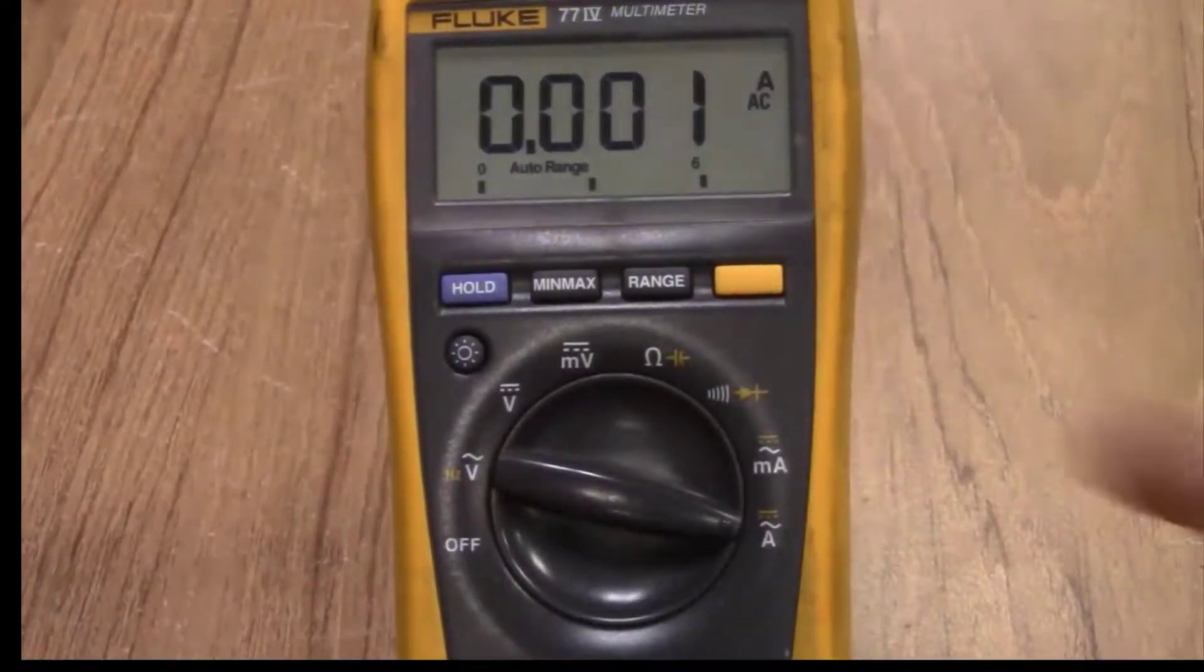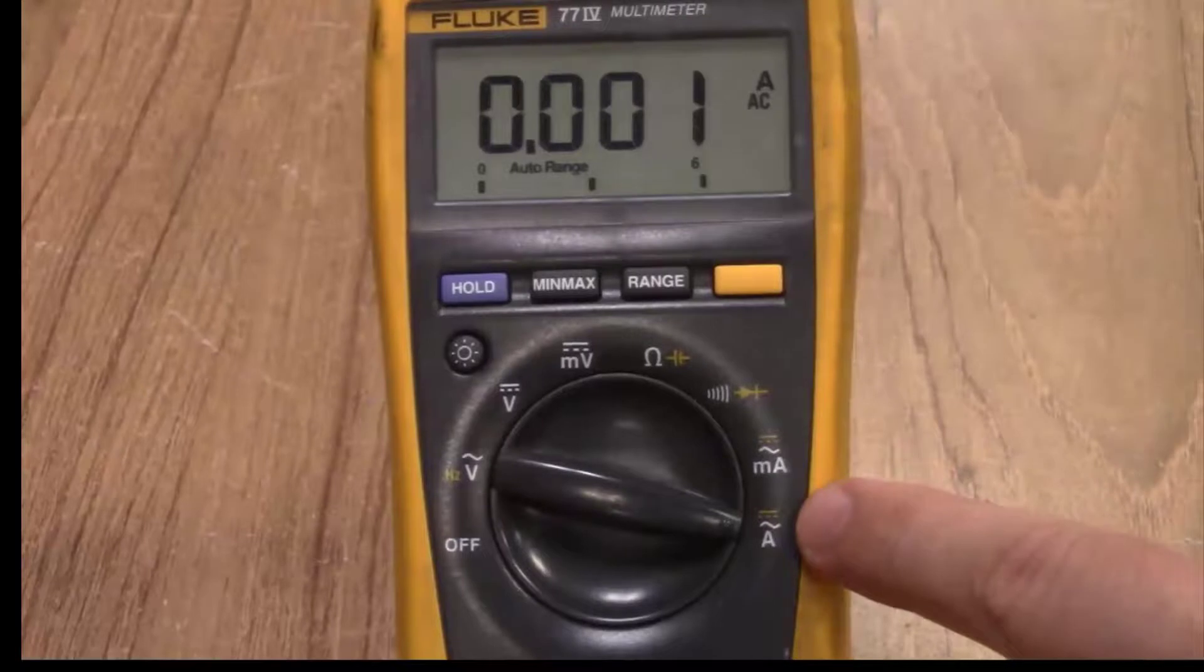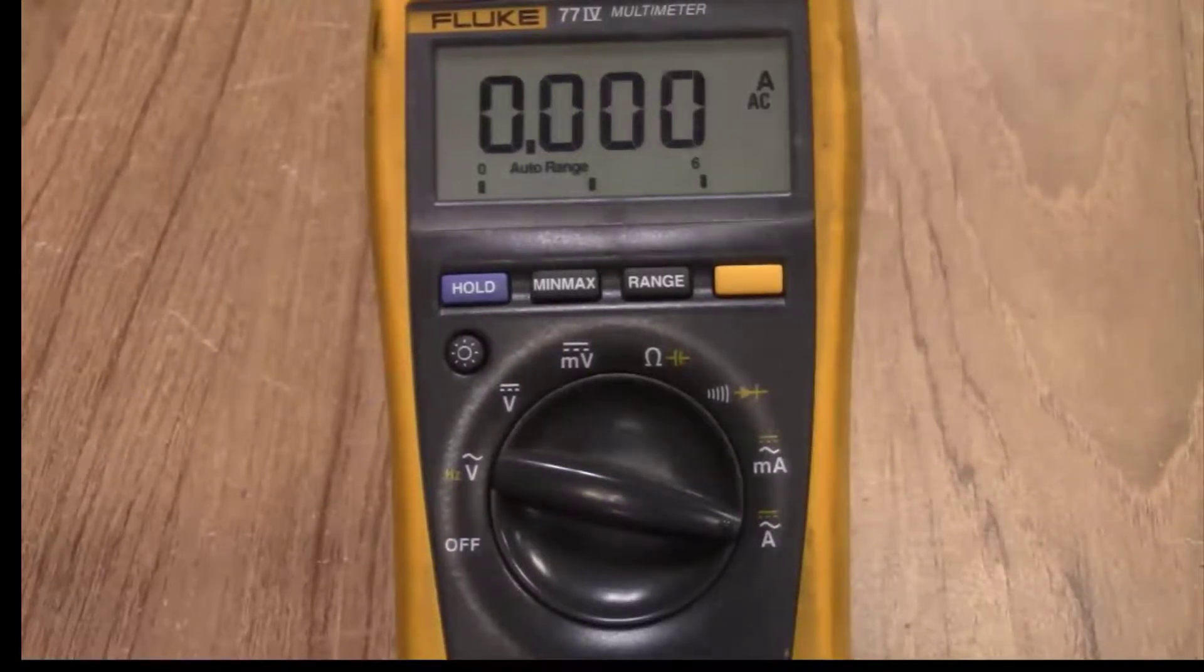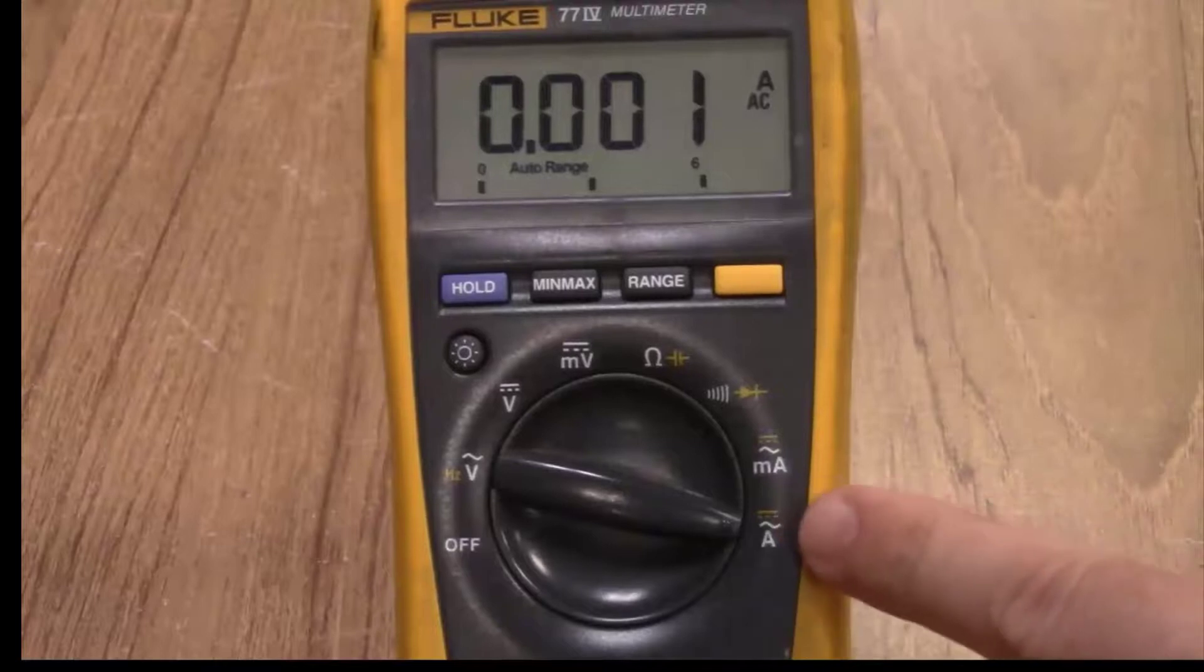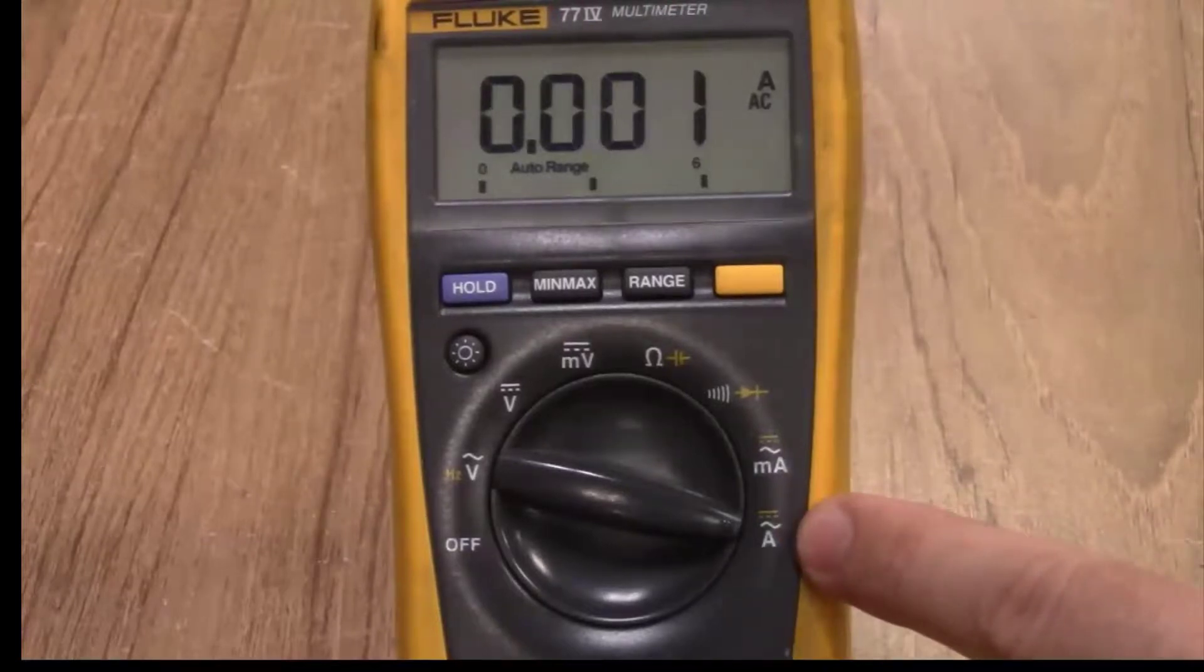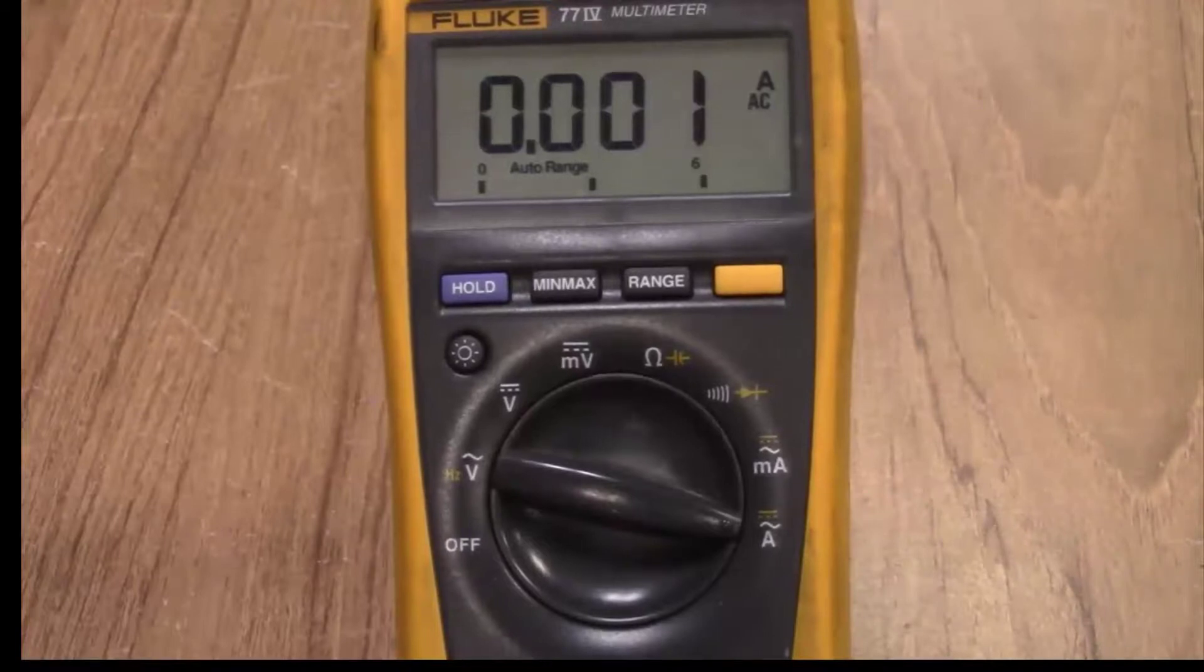So if you make a selection where you see a yellow icon you can switch between two different settings on that same position of the dial. Here if you select amperage you're going to be plugged into the lower 10 amp port with your red lead.